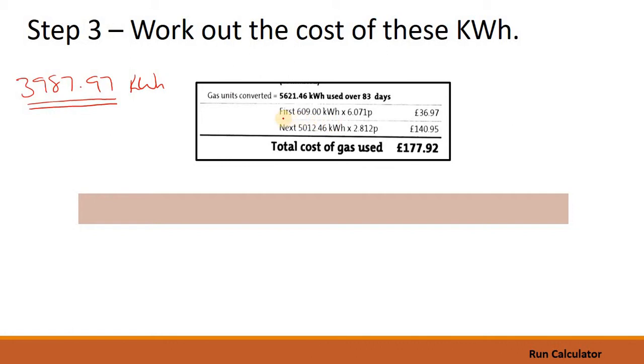Now, something I'm going to explain in depth here because this can get a little bit confusing for people. It tells us in the question that the pricing structure hasn't changed. Now, what that means is this: our first 609 kilowatt hours will each cost 6.071 pence which means the total cost will be £36.97.